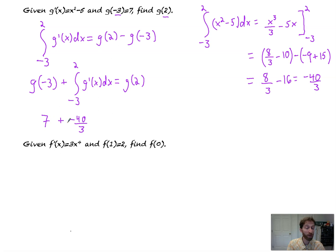So this is 21 thirds minus 40 thirds, negative 19 thirds is the value that we get for g of 2. So that's what g of 2 is equal to.